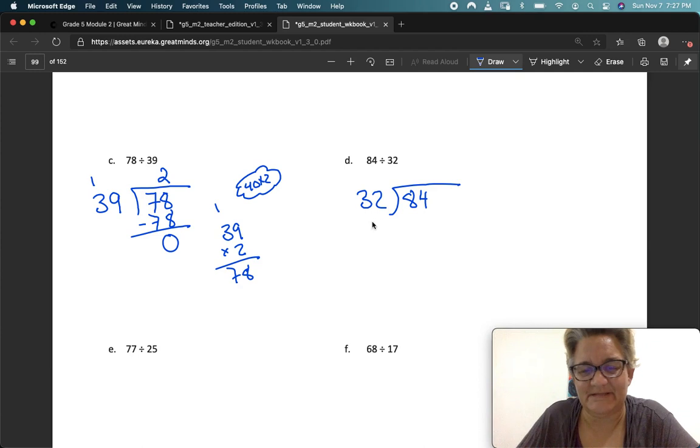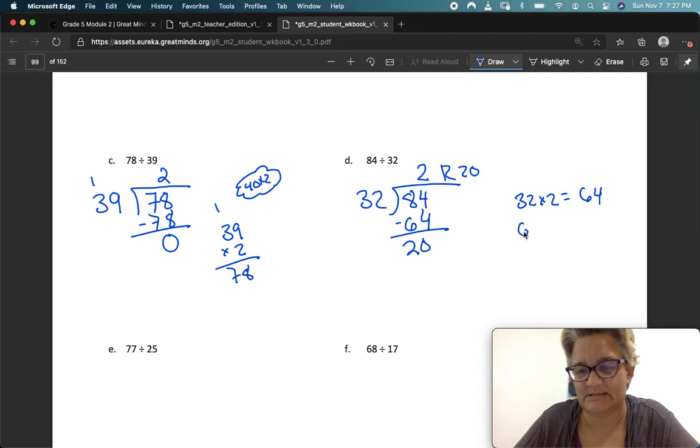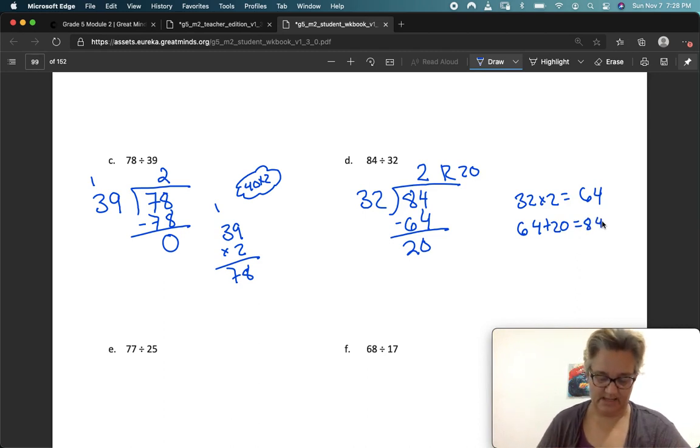Now, if I were to multiply 32 times 2, I would get 64. And that is smaller than 84. But if I multiplied by 3, I'd have 96, which is too big. So now I'm just going to keep it with the 2. 2 times 2 is 4, 2 times 3 is 6. And then I have a remainder of 20. So now I check my work. 32 times 2 equals 64. 64 plus 20 equals 84.